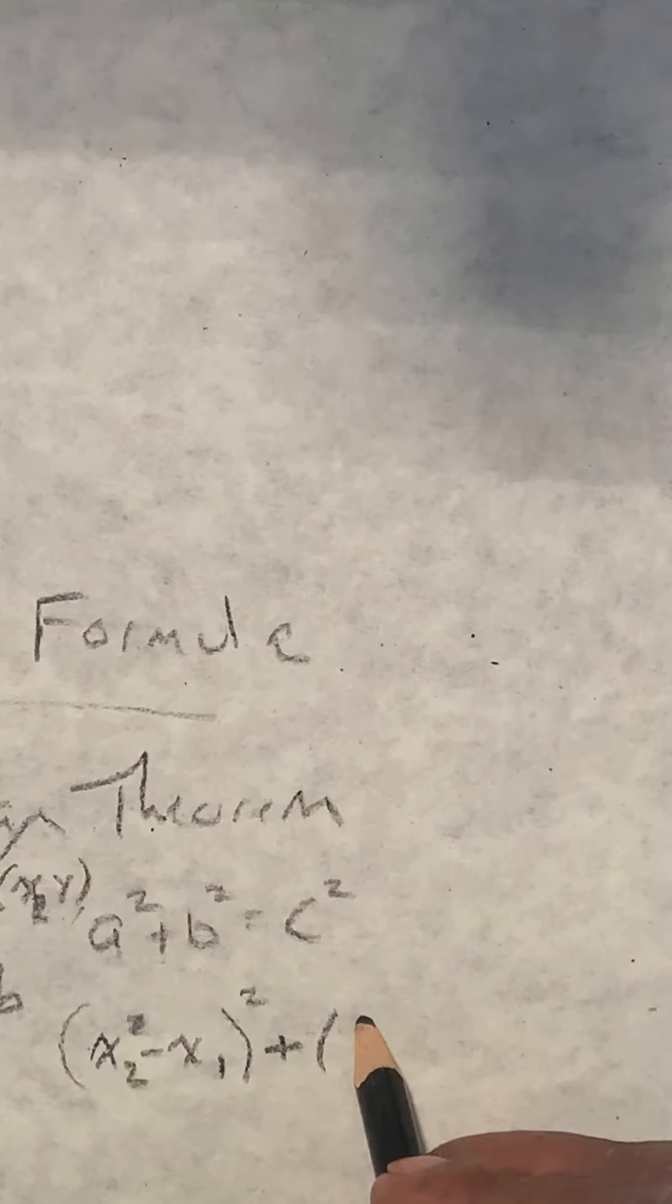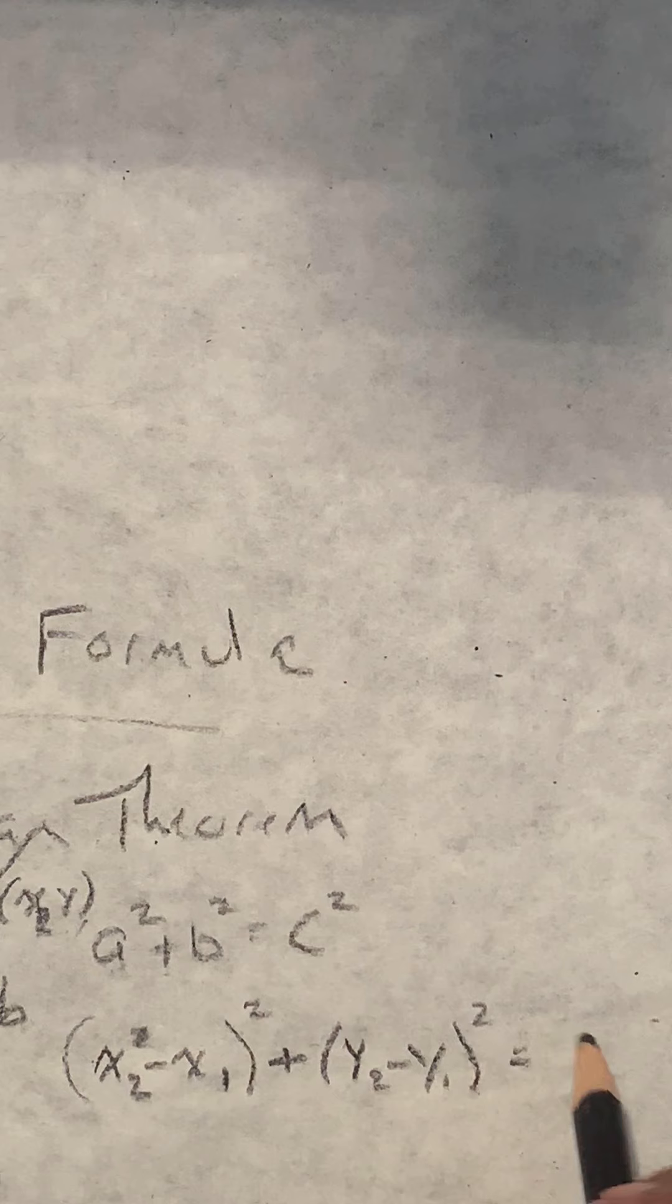Similarly, to figure out what the change in our B is, which is our change in our Y's, we're going to find the difference between our Y's. Y2 minus Y1, quantity squared. And that'll equal our distance, our C squared.